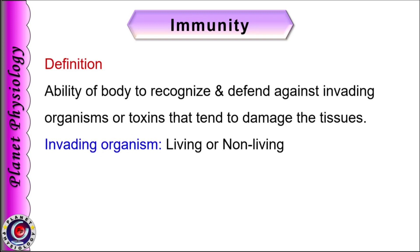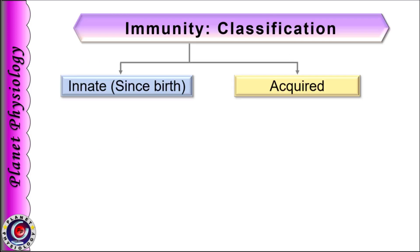Immunity is defined as ability of body to recognize and defend against invading organisms or toxins that tend to damage the tissues. Invading organisms may be living or non-living in nature. Based on the time of acquisition of this defense mechanism, immune system is classified into two: innate and acquired.